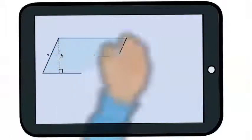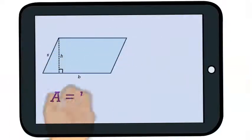Let's review these formulas. The area of a parallelogram is base times height. Remember the height is measured at a 90 degree angle. It is not this length of the slanted side.